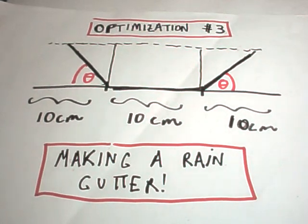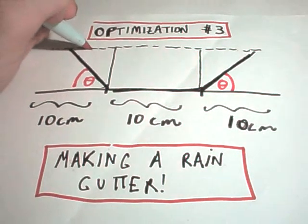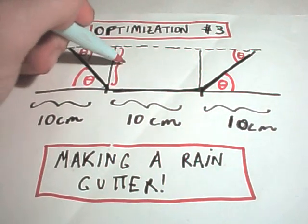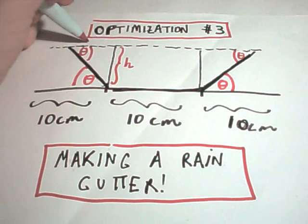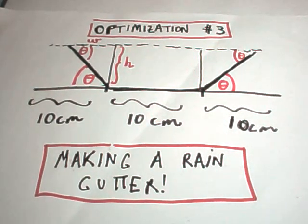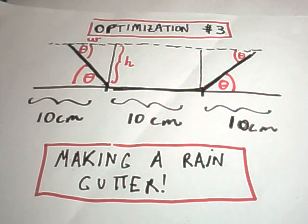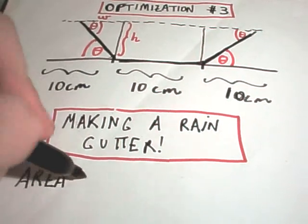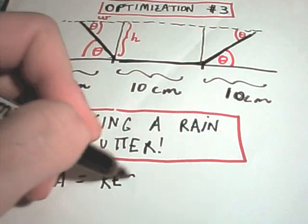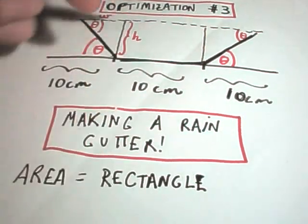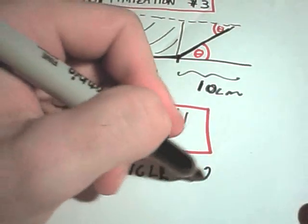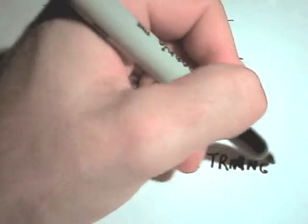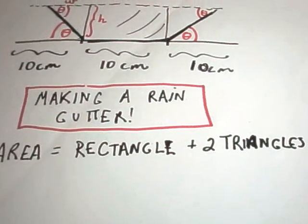So if this is the angle theta down here, that means each one of these angles would also be theta. I'll call this little top part height, and maybe I'll call the side part w for width of the triangle. So the area simply of this gutter is going to be the rectangular part, the part in the middle, and then we've got two times the area of the triangles.